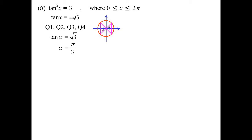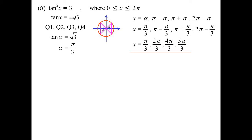60 degrees is π/3, so we're going to get four answers: the acute angle, π minus the acute angle, π plus the acute angle, 2π minus the acute angle. There's all our answers: π/3, 2π/3, 4π/3, 5π/3.